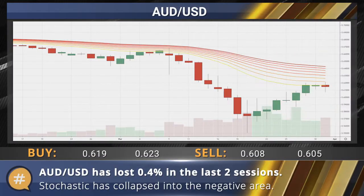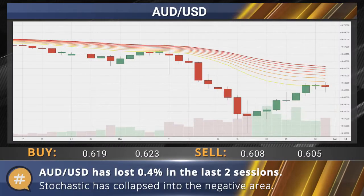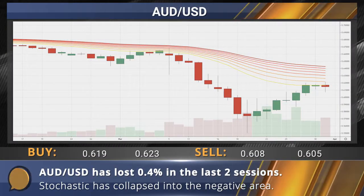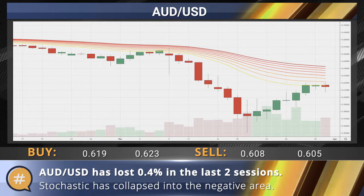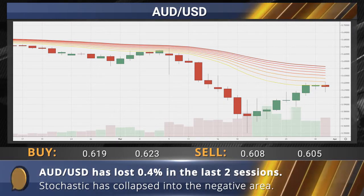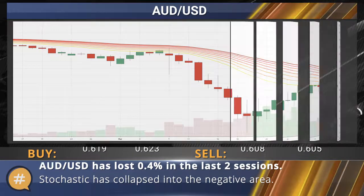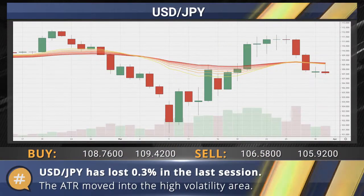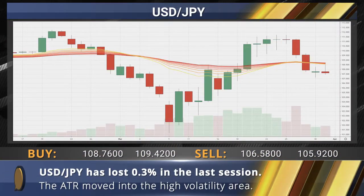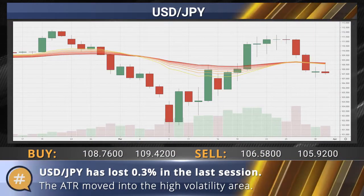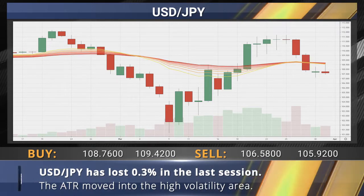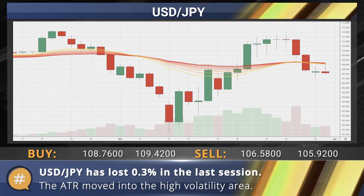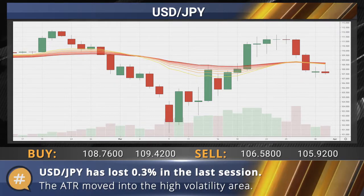The Aussie dollar pair has lost 0.4% in the last two sessions. Stochastic has collapsed into the negative area. The dollar-yen pair has lost 0.3% in the last session. The ATR moved into the high volatility area.